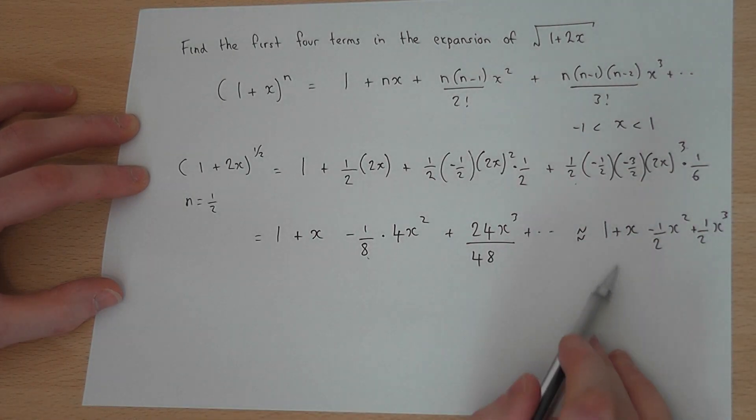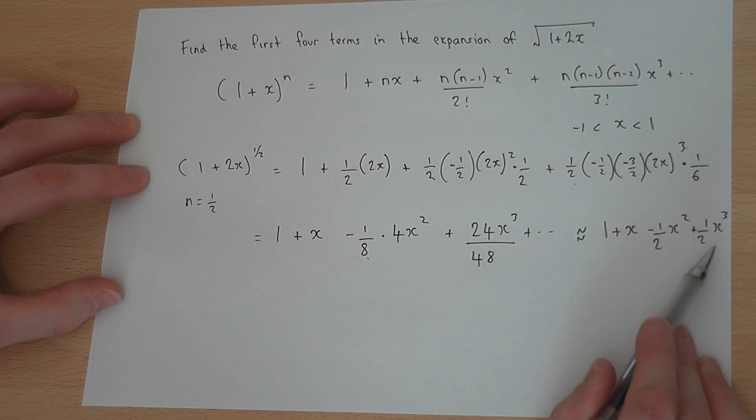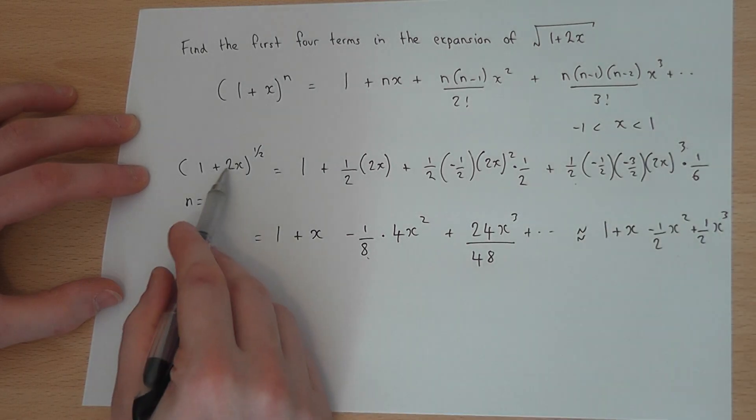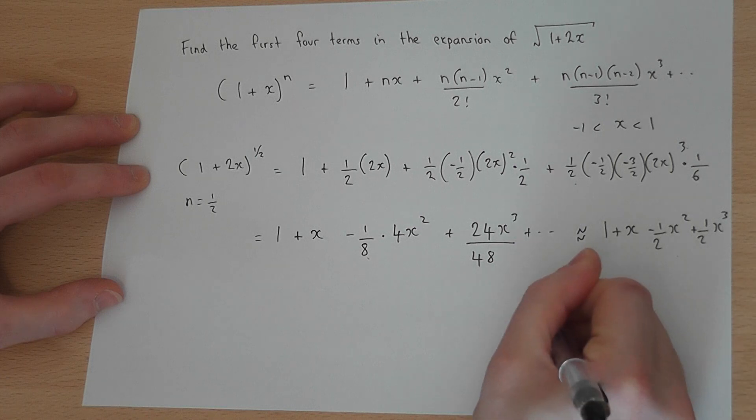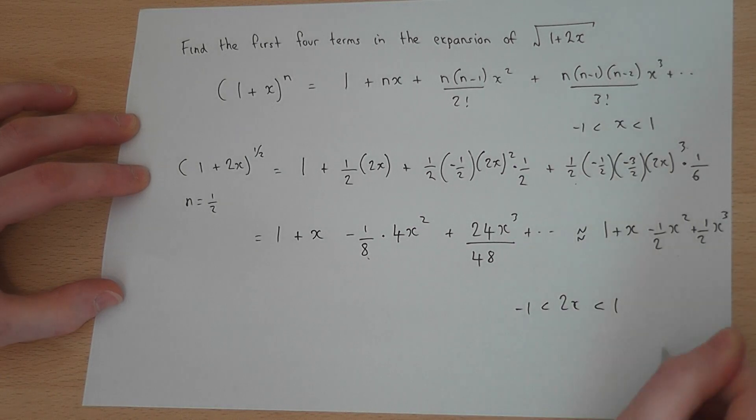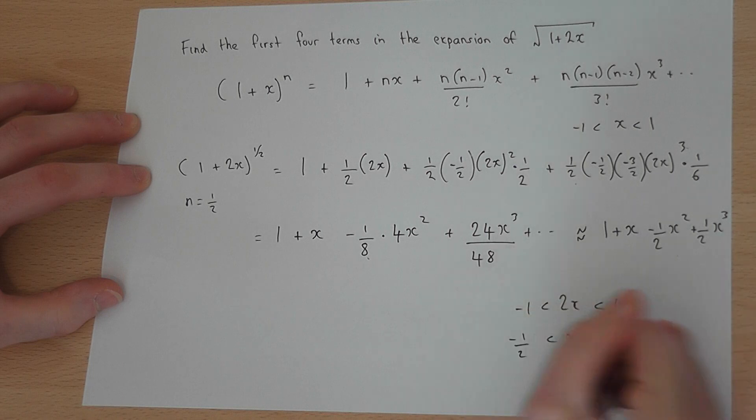So that is the binomial expansion up to the first four terms. And this is valid as long as 2x is between minus 1 and 1, or x is between minus a half and a half.